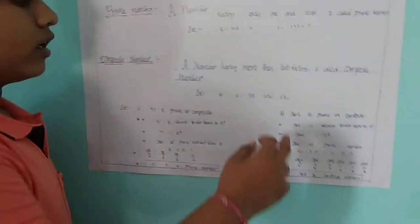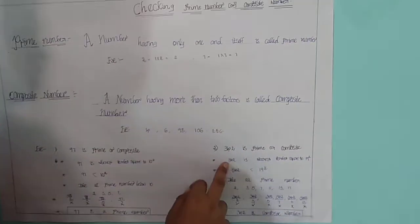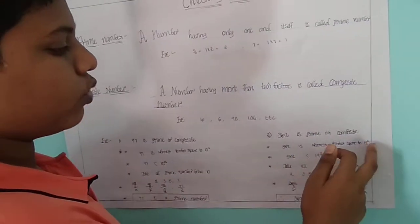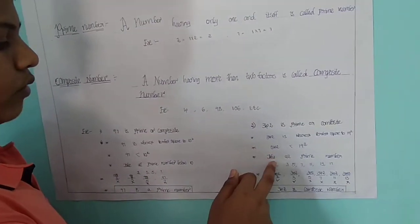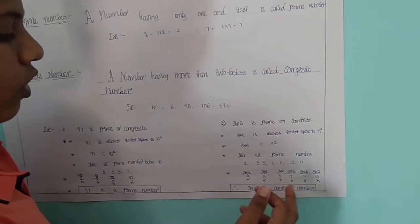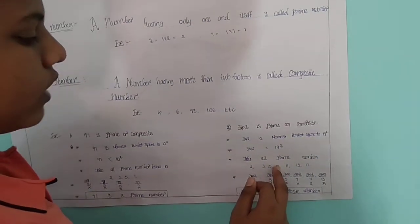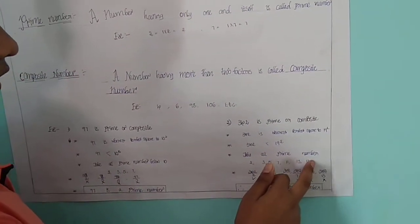Another example: take 342. 342 is nearest to the perfect square 19². We should take all prime numbers below 19: 2, 3, 5, 7, 11, 13, 17.